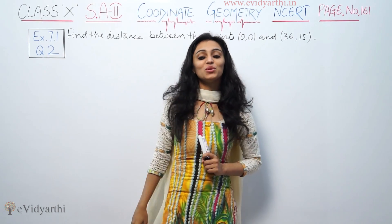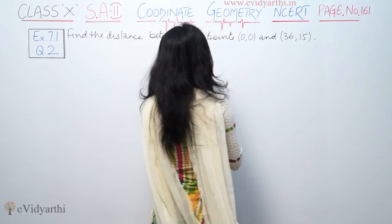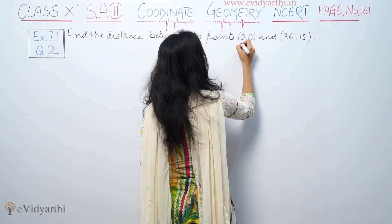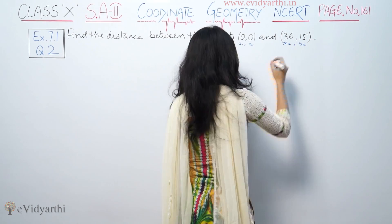So, to find distance we use the distance formula. Here are our two points (0,0) and (36,15). This represents x1, y1, x2, y2.